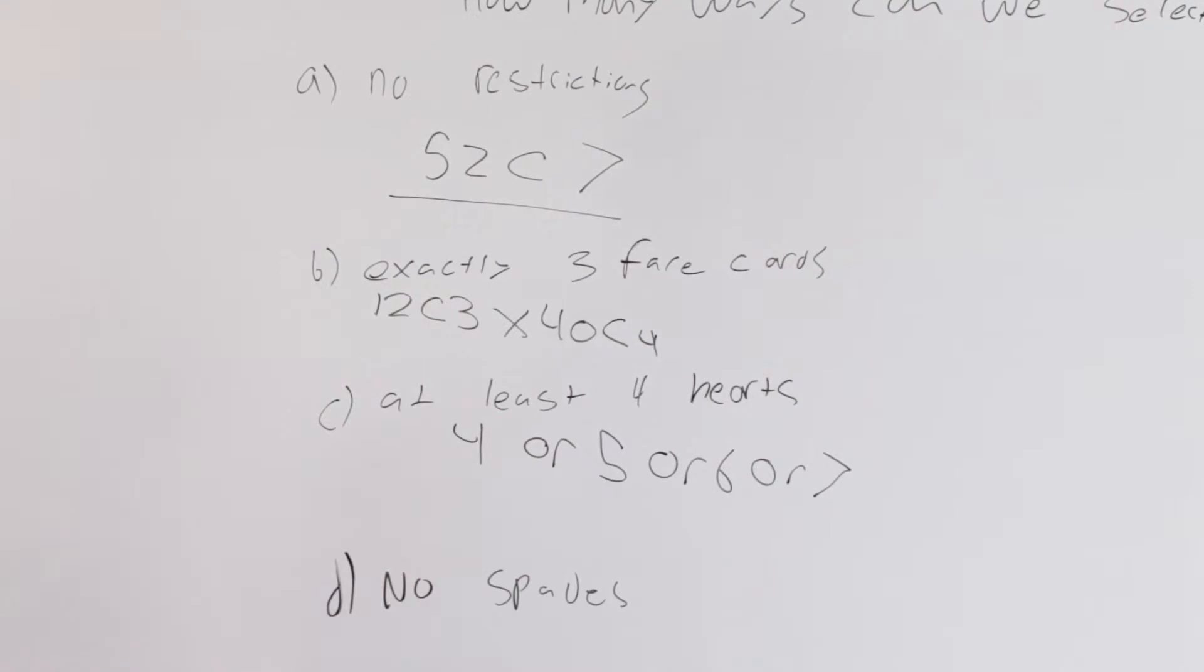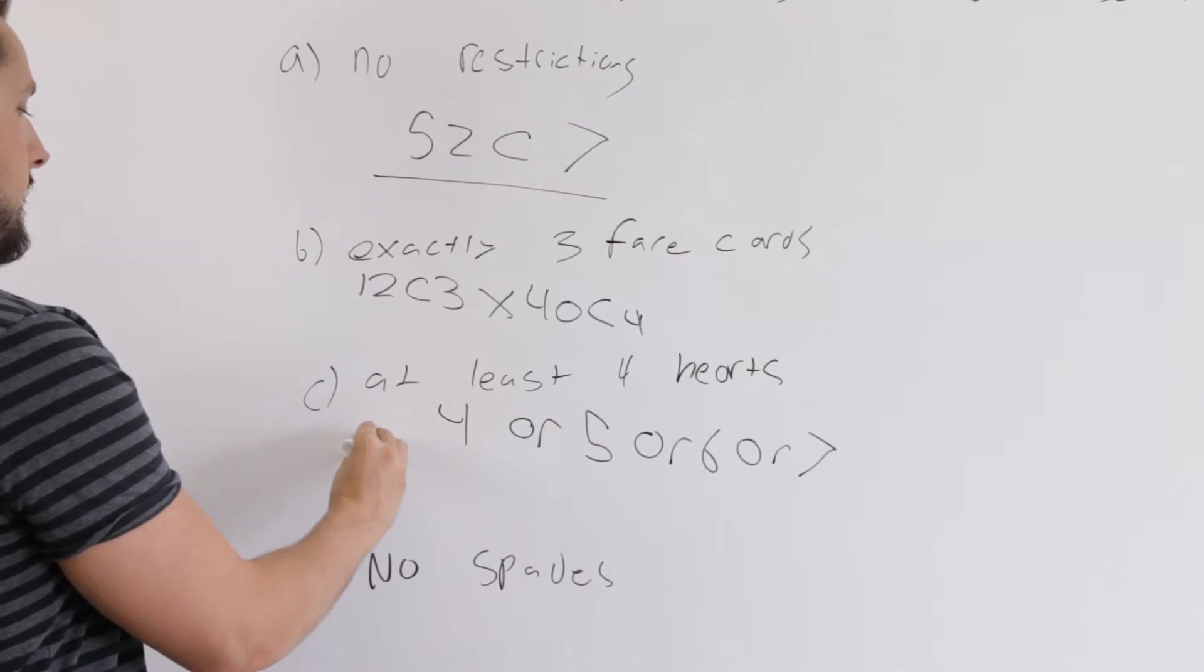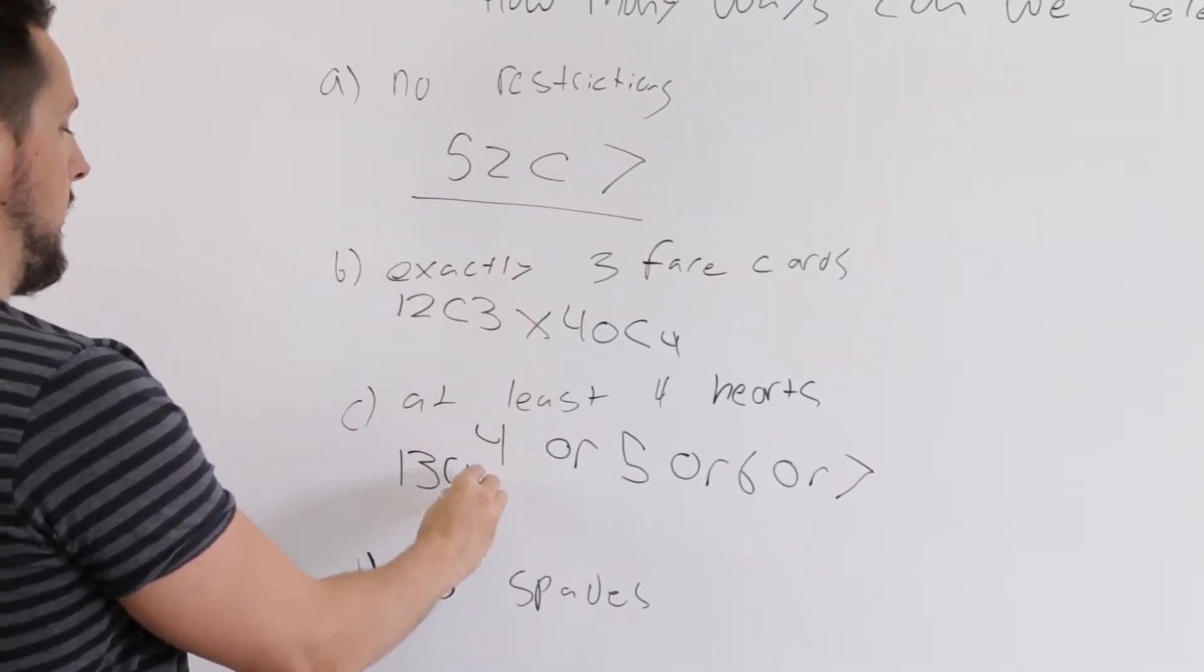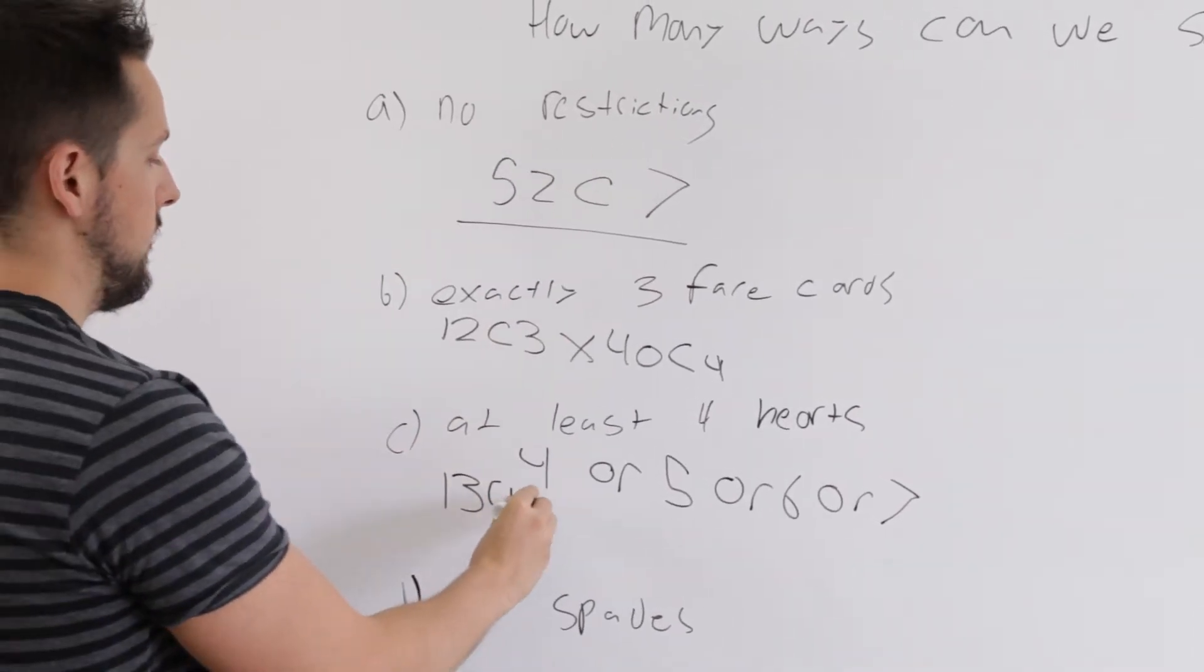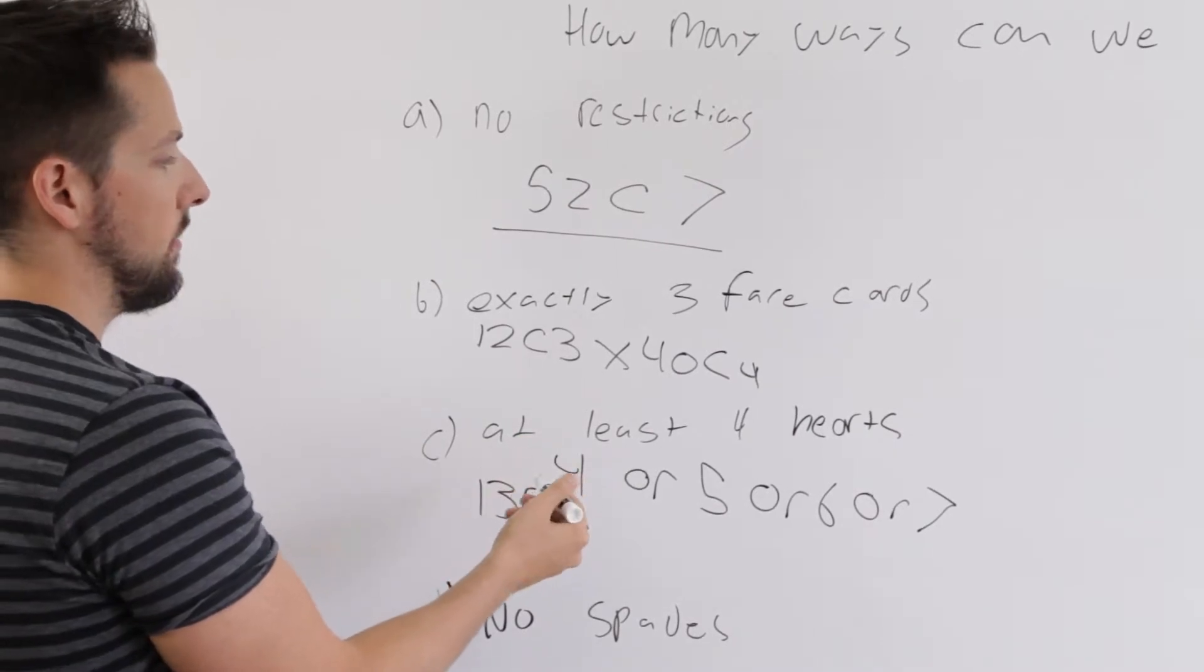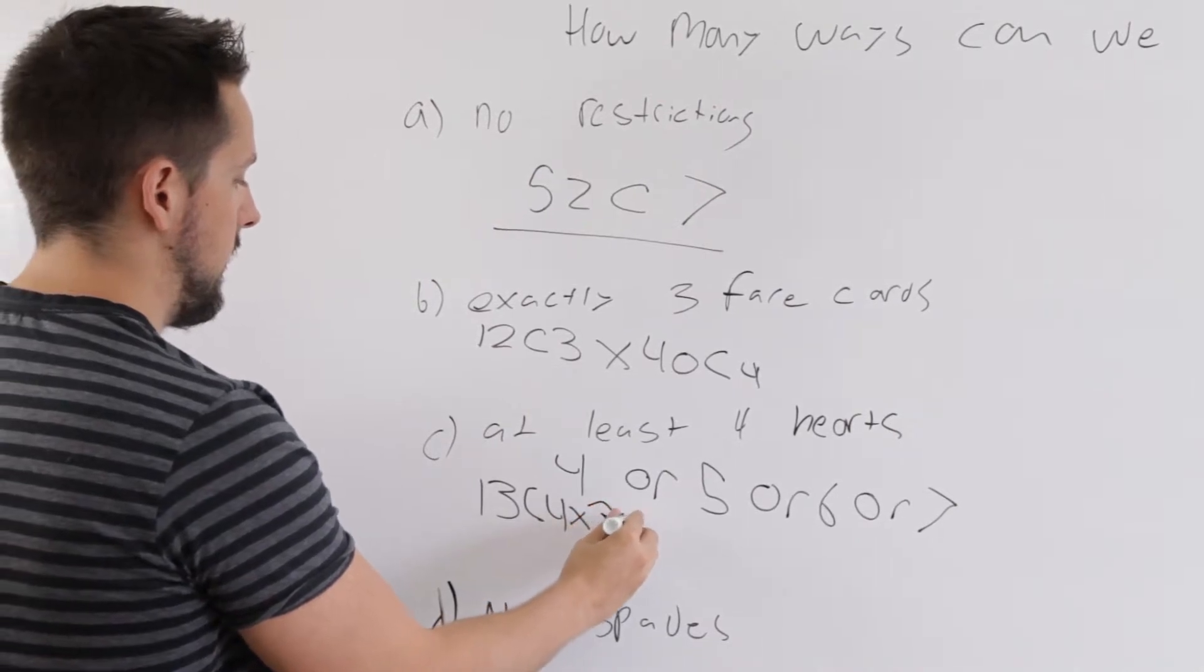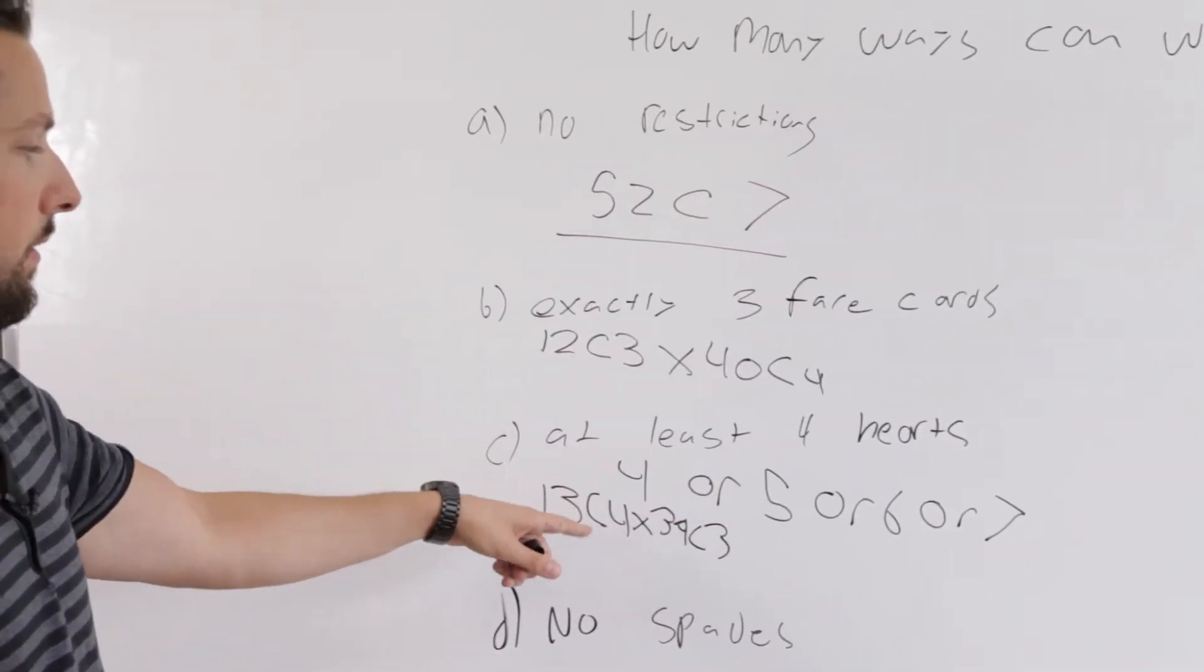So let's calculate how do we have four hearts in? Well, how many hearts are there total? 13. So 13 hearts. We're choosing four of them. And on top of that we need to round out the deck to seven. So it's and multiply. The remaining number of cards that aren't hearts is 39. And we're choosing three from there. So that's how we calculate the first part.